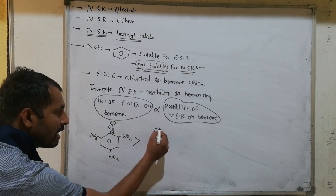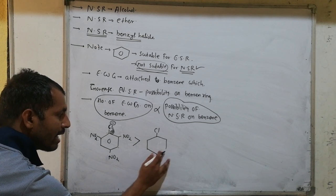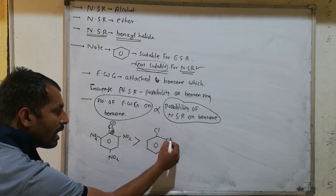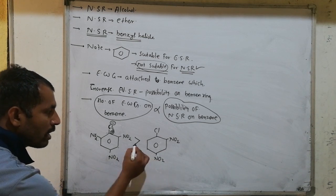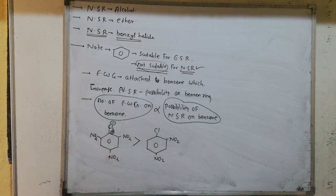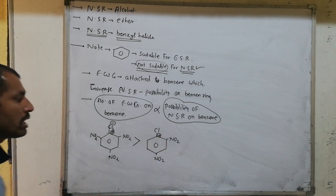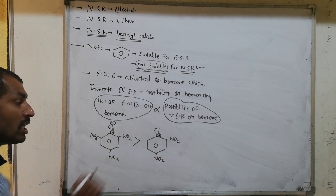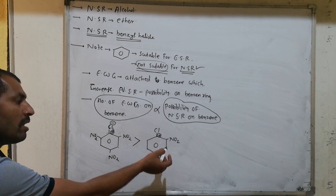For example, on the benzene ring, if we have two NO2 groups, then the reactivity will be compared accordingly. With two NO2 groups, there is comparatively less positive charge stabilization. This makes nucleophilic substitution reaction a more favorable condition than with only one NO2 group.